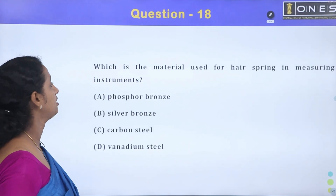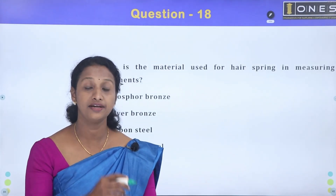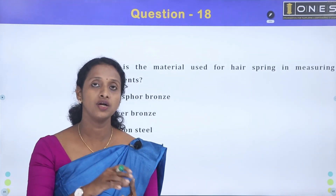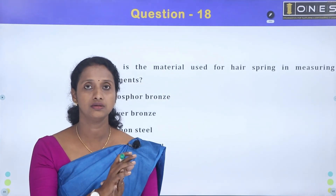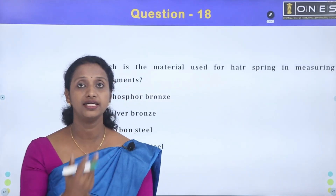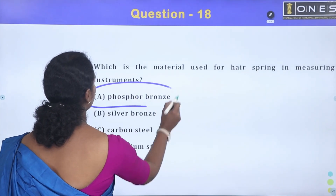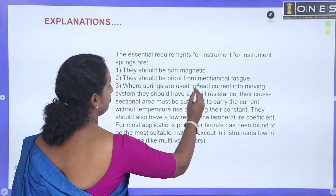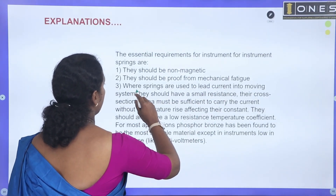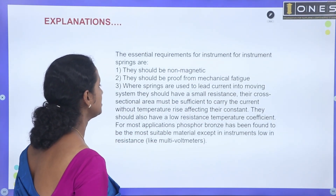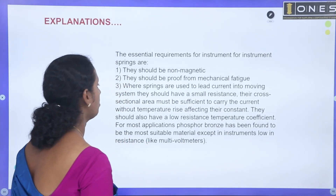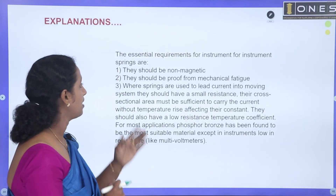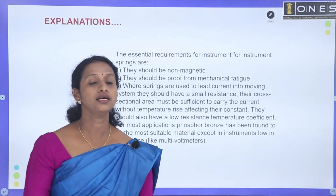Next: what material is used for the hair spring in measuring instruments? In measuring instruments, there is deflection — controlling torque and deflecting torque cause the needle to move. The essential requirements for spring material are: it should be non-magnetic, proof against mechanical fatigue, and where springs carry current into the moving system, they should have small resistance. The cross-sectional area must be sufficient to carry current without temperature rise affecting their constant.